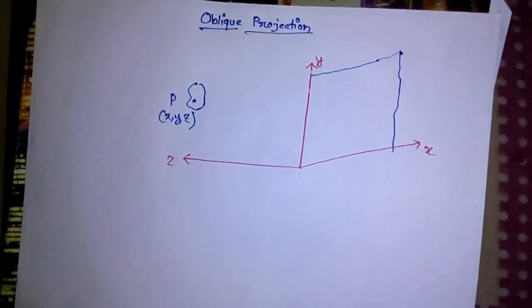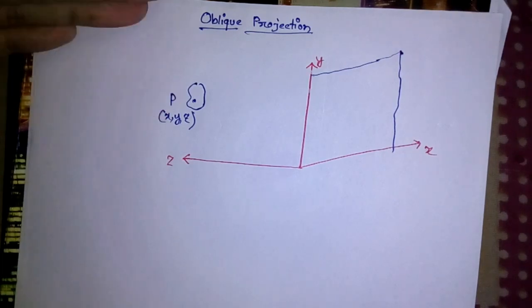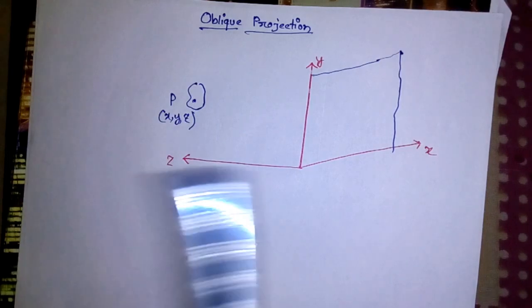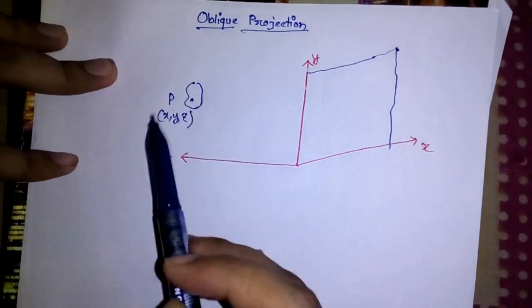Let's talk about oblique projection. In oblique projection, the ray of projection makes any angle rather than 90 degrees with the viewing plane. Let's quickly dive into the main course and let's say that this is an object.